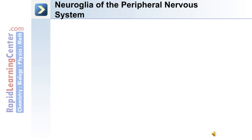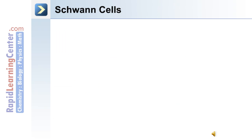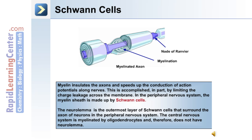In the peripheral nervous system, the neuroglia consists of satellite cells and Schwann cells. The peripheral nerves contain neuron cell bodies in the peripheral ganglia surrounded by satellite cells. Schwann cells: myelin insulates the axon and speeds up the conduction of action potentials along nerves. This is accomplished in part by limiting the charge leakage across the membrane. In the peripheral nervous system, the myelin sheath is made up by Schwann cells.